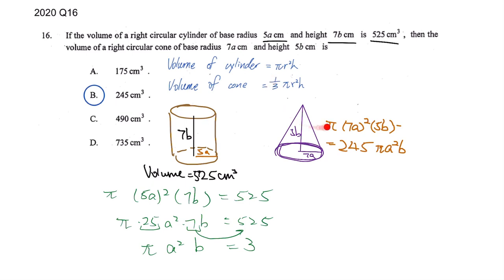Remember this is a cone so we also need 1 over 3. I'm so sorry I forgot that part. So 1 over 3 times 245.